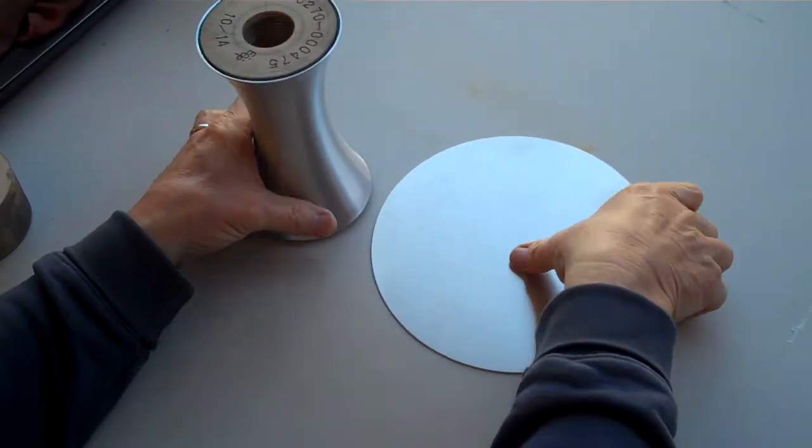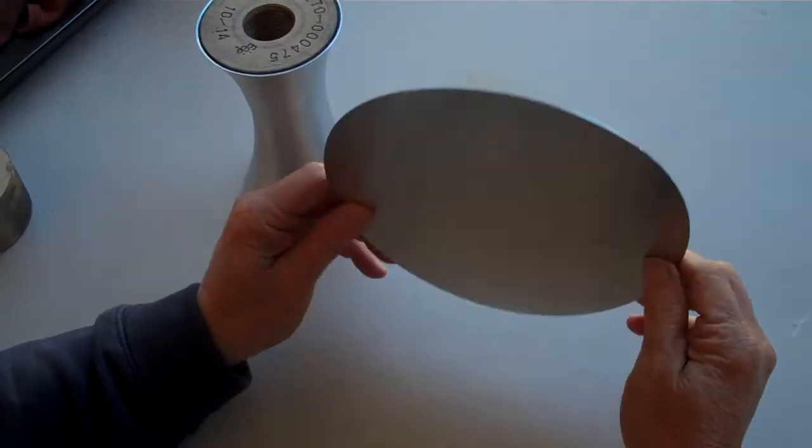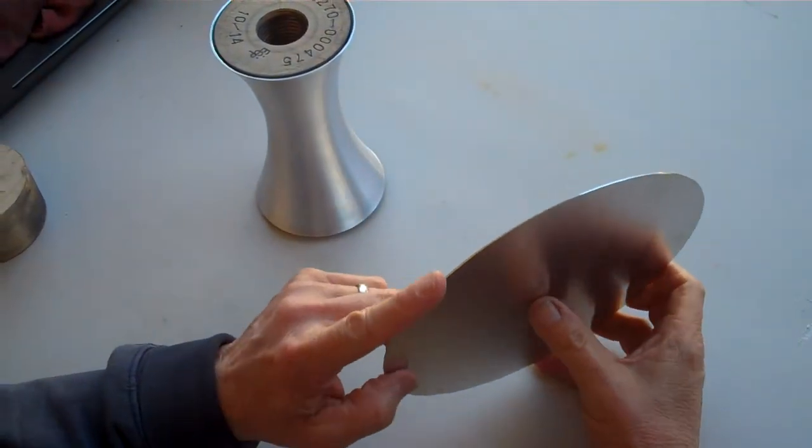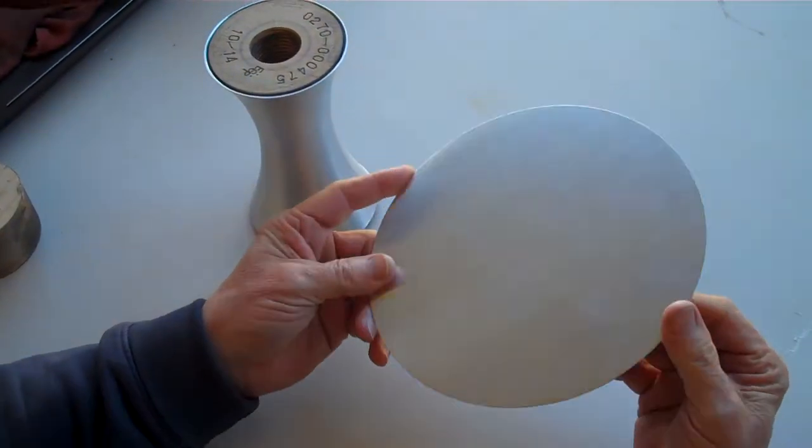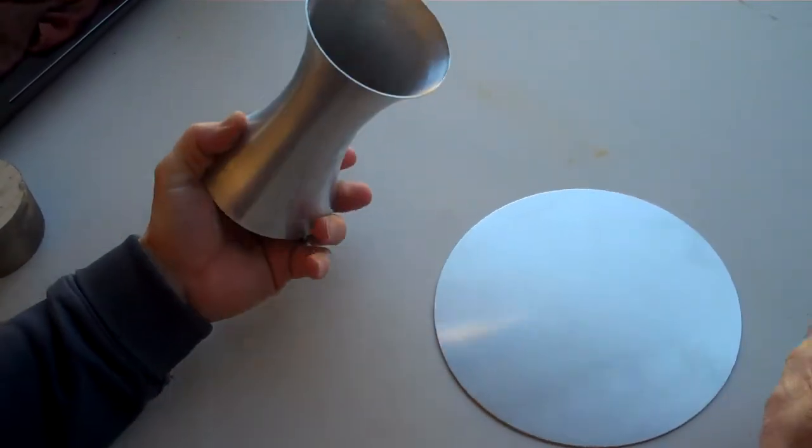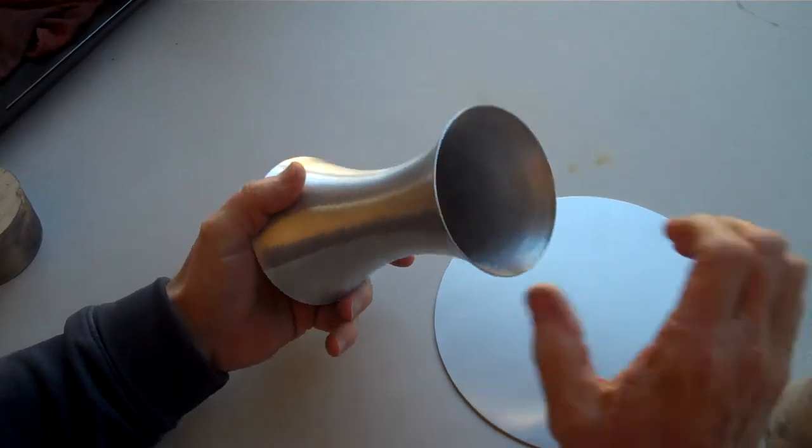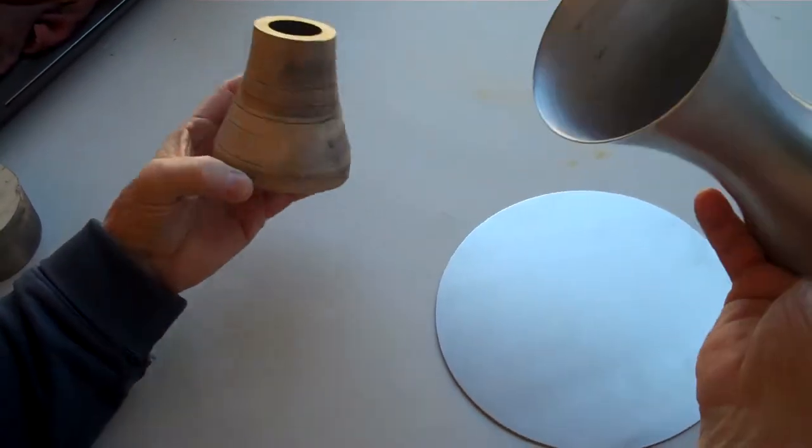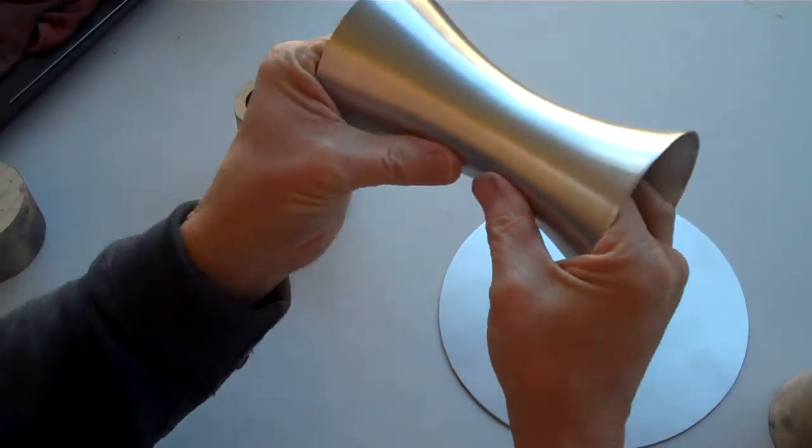The other thing that's important is the original piece of material is one millimeter thick. And so using conventional metal spinning, this surface here where the finished product should also be one millimeter thick, and it is, all over the surface.